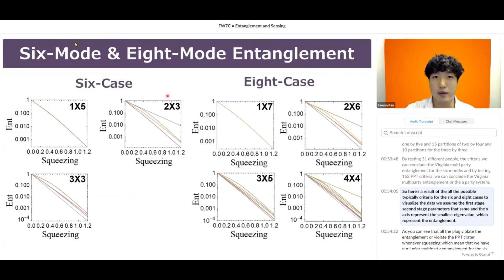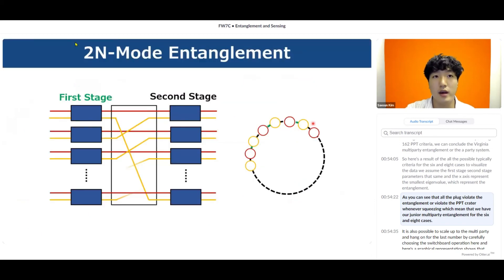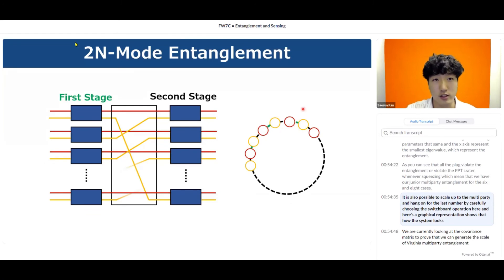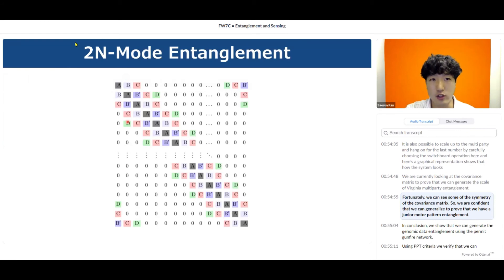Here are the results of all possible PPT criteria for the 6 and 8-mode cases. To visualize the data, we assume the first and second stage parameters are equal, and the x-axis represents the smallest eigenvalue indicating entanglement. All plots violate the PPT criteria when we have squeezing, confirming genuine multi-partite entanglement for the 6 and 8-mode cases. It is also possible to scale up to larger multi-partite entanglement by carefully choosing the switchboard operation. We are currently analyzing the covariance matrix to prove scalable genuine multi-partite entanglement, and we can see some symmetry in the covariance matrix, giving us confidence that we can generalize the proof.